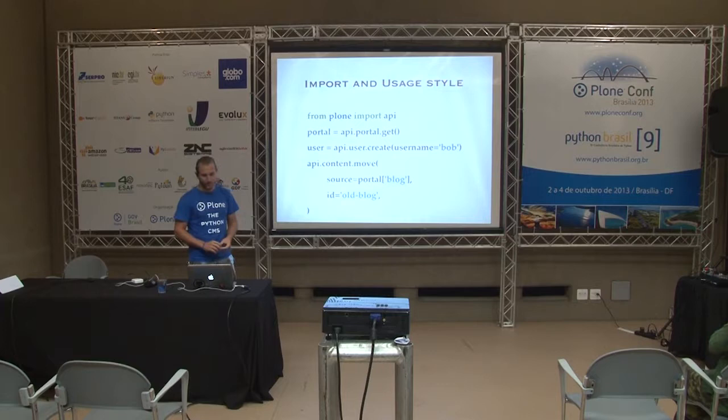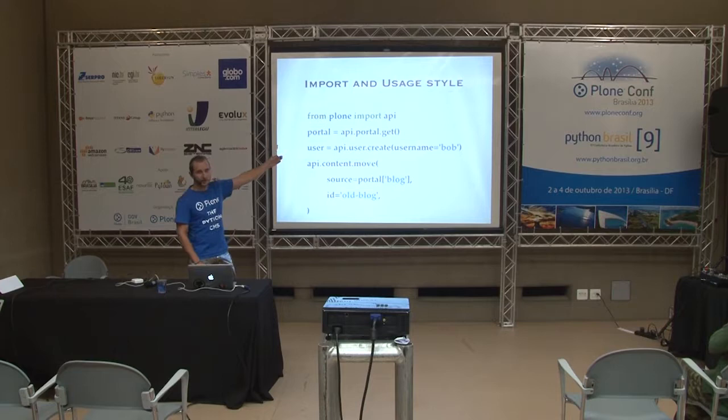So how would you use Plone API? You do 'from plone import api' and then you'd call a group and then a method — for example api.portal and then a method. We have five different groups: portal, content, users, groups, and environment.